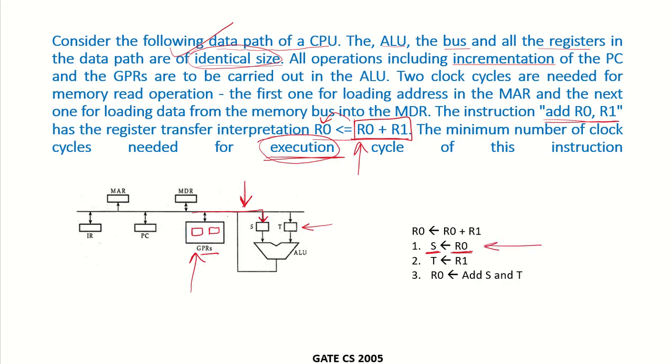In the first clock cycle, data is transferred from R0 to the input register S of the ALU. In the second cycle, data will be transferred from R1 over the bus into the input register T.